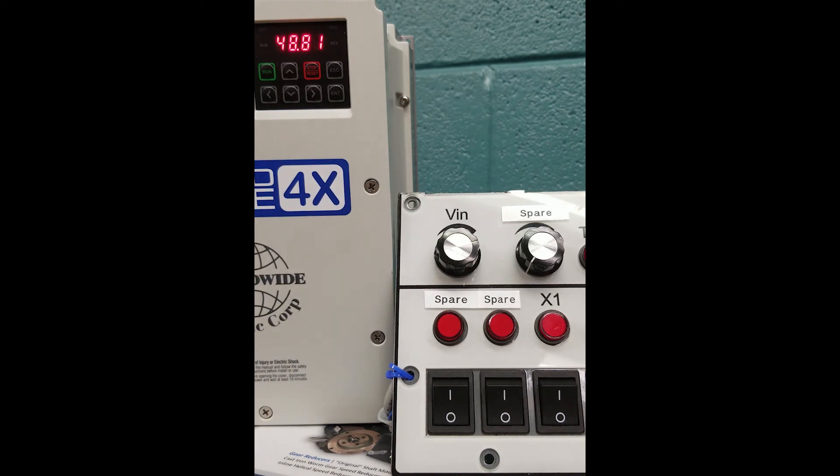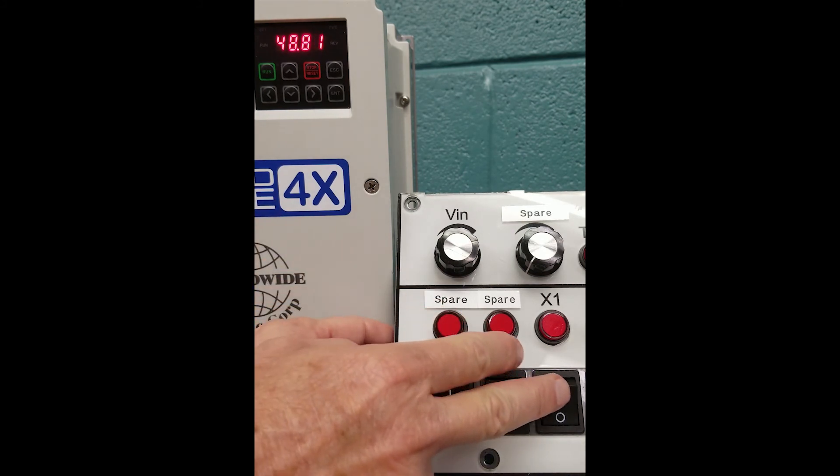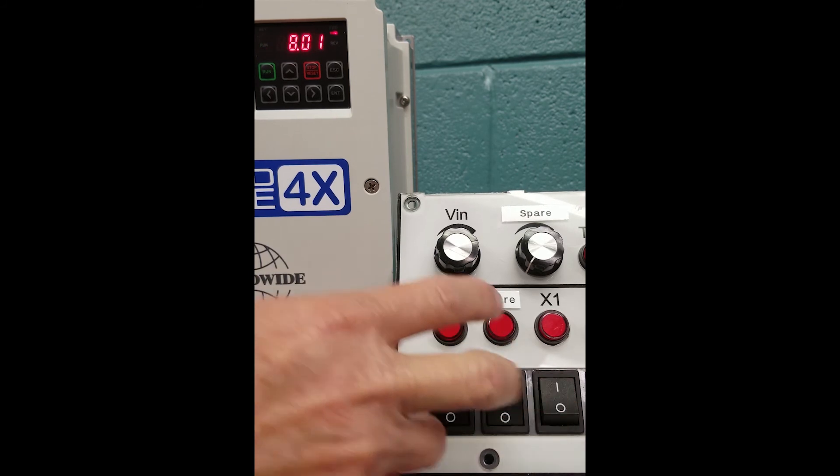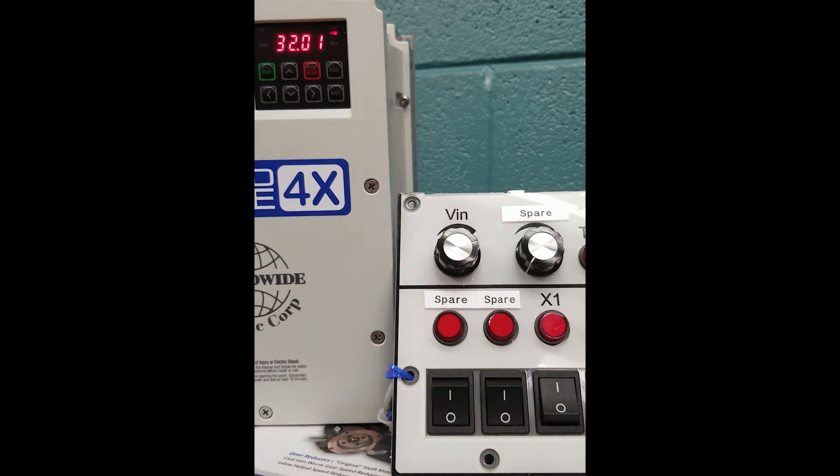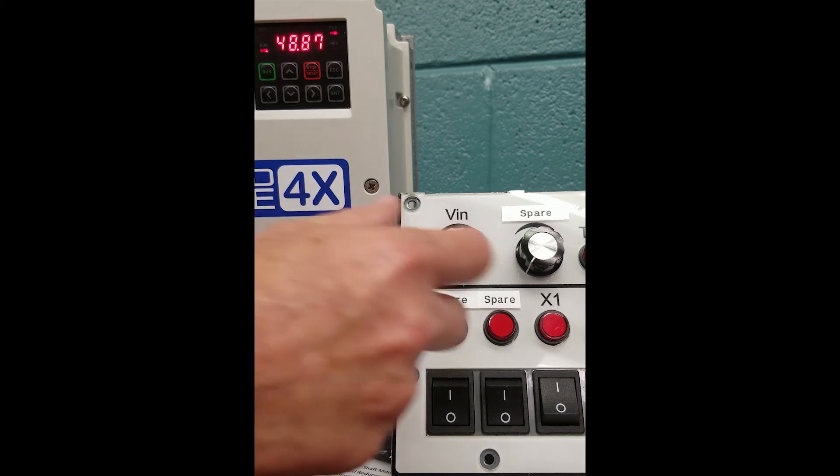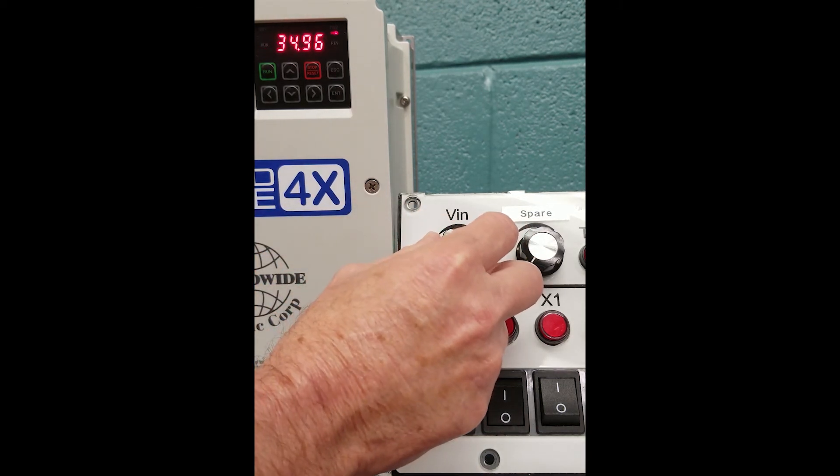Now we're going to hit our start-stop button, and we're going to select it on. And now you'll see our VFD is going to climb to the acceleration of where our speed pot was left at, which is 48 hertz. You can see as we move the speed pot around, we can change the hertz setting.